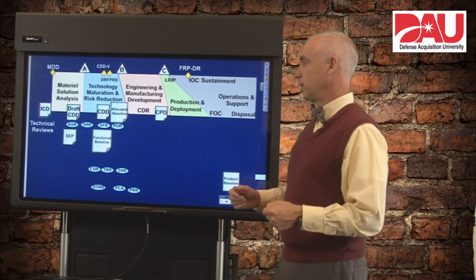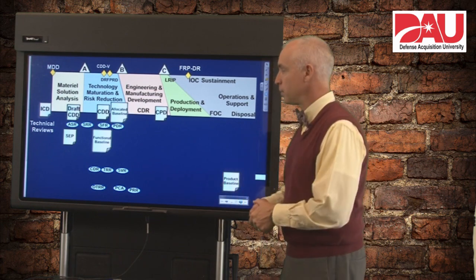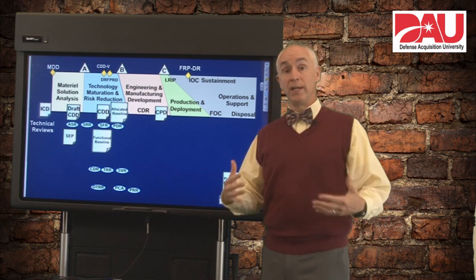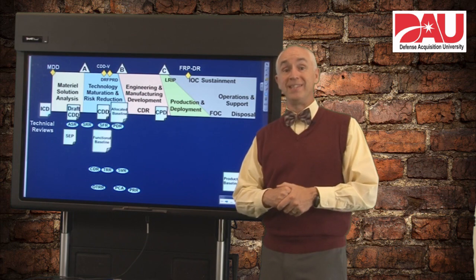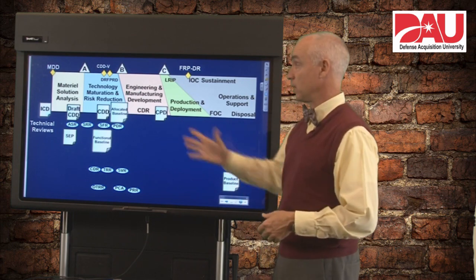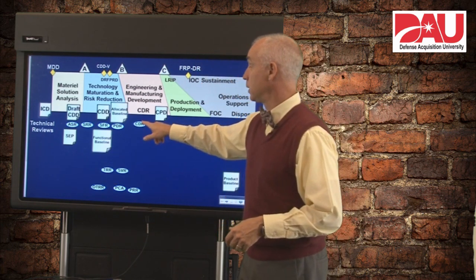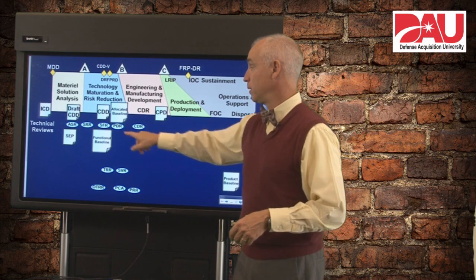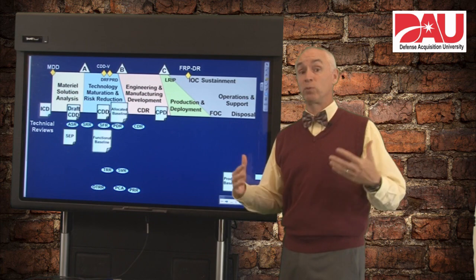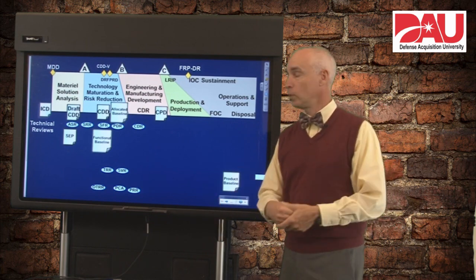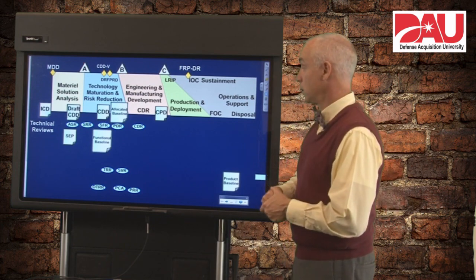As we get into engineering and manufacturing development, the Preliminary Design Review — which must be done prior to Milestone B — should have given us a good risk assessment of where we are going to be in the design. We then start on the detailed design. The detailed design work happens after Milestone B, and once that work is done, we will have a Critical Design Review. The PDR and CDR are the two design reviews that are actually required on our system — you're not going to get through your different milestones without those two particular technical reviews.